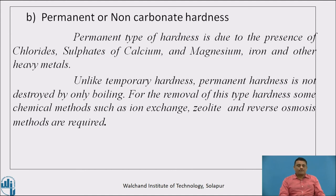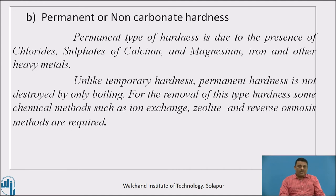The second type of hardness is permanent or non-carbonate hardness. Permanent hardness is due to the presence of chlorides and sulphates of calcium and magnesium, and also caused by trace amounts of iron and other heavy metal ions. Unlike temporary hardness, permanent hardness cannot be removed by boiling alone. For its removal, chemical methods such as ion exchange, zeolite and reverse osmosis are required.